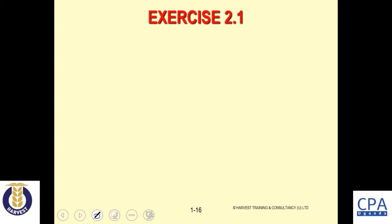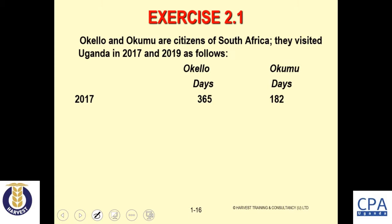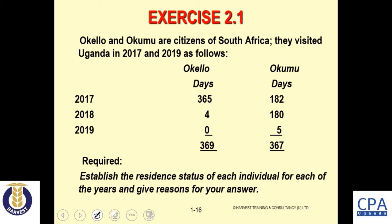Exercise 2.1: Okero and Okumu are citizens of South Africa. They visited Uganda in 2017 and 2019, with information provided on the number of days each stayed in Uganda. We are required to establish the resident status of each individual for those years and give reasons. The answers have already been provided in the notes — please review them, and let me know in your post if anything is unclear.